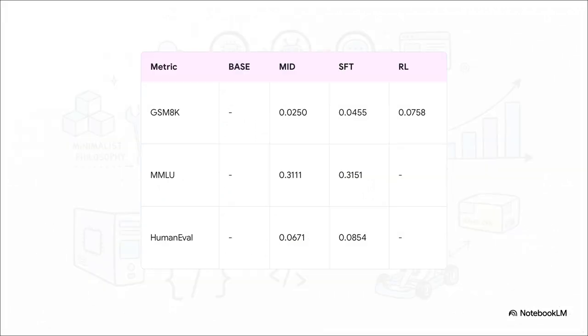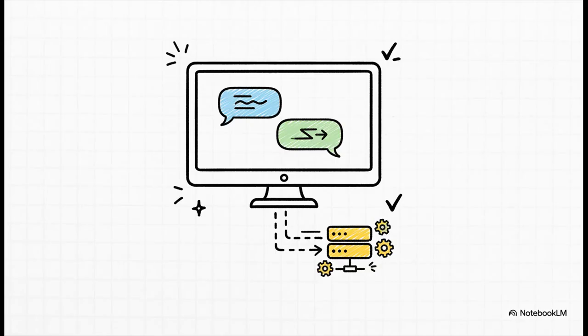And you can see that improvement so clearly right here. Just look at the GSM-8K metric. That's basically its grade on math problems. The model starts out pretty low. But after supervised fine-tuning and reinforcement learning, that score triples. We see the same kind of jump in its coding ability, which is measured by human eval. Every single stage of the pipeline makes the model smarter in a very real, tangible way.